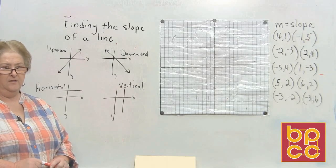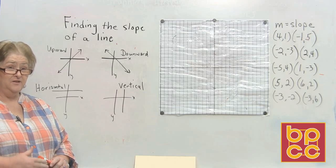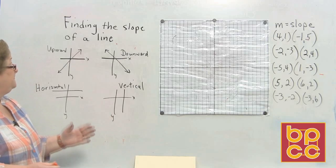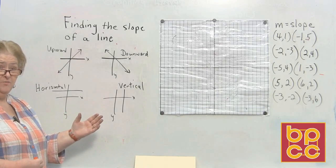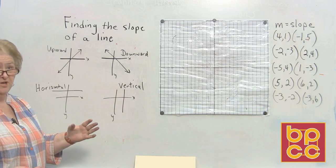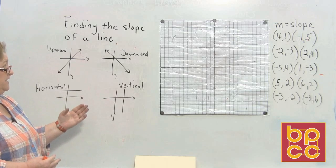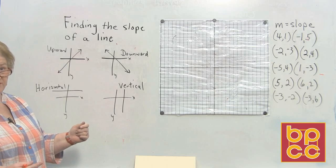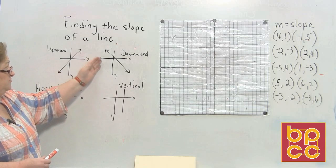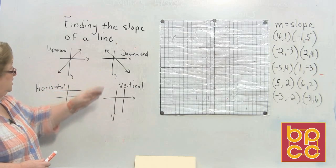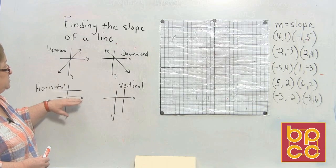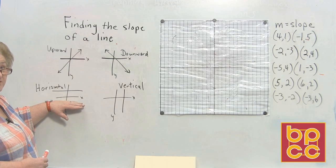We have been graphing in other lessons, and we have seen lines that go uphill, downhill, horizontal, and vertical. We're going to find the actual slope. We've been seeing slopes in slope-intercept form, but we've never actually had to calculate a slope from a line that is drawn for us. As we look at finding slope, there are only four choices: a line going upward has a positive slope, downward has a negative slope, a horizontal line has zero slope.